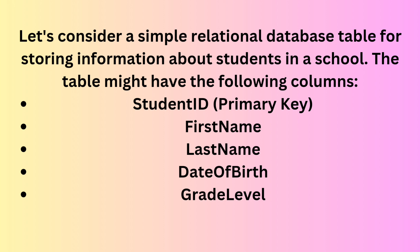Here's an example. Consider a simple relational database table for storing information about students in a school. The table might have the following columns: Student ID (primary key), first name, last name, date of birth, and grade level. In this scenario, the primary key is the Student ID column, and it enforces entity integrity. Each student is assigned a unique Student ID which serves as their identifier, guaranteeing the uniqueness of each student's record.